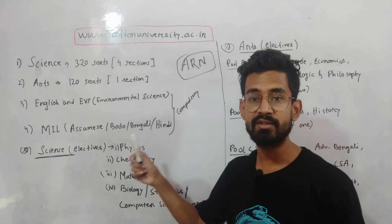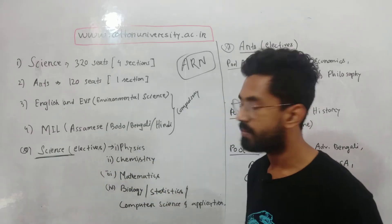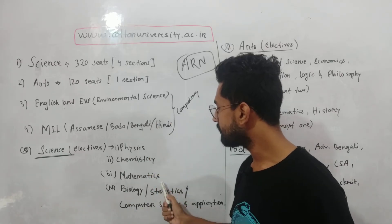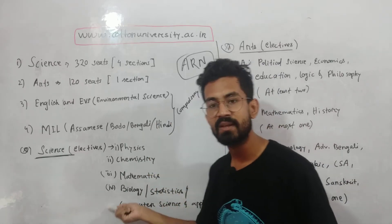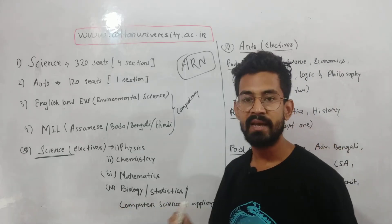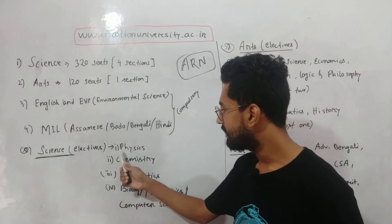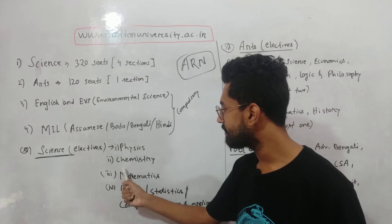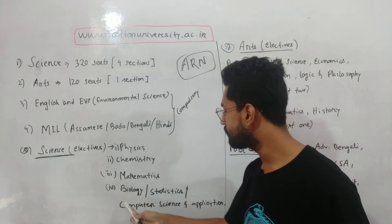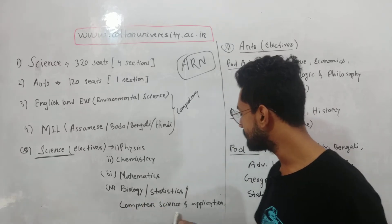The third category is science or elective subjects. Science or elective is the most important part. Physics is compulsory, chemistry is compulsory, and mathematics is compulsory. The optional subjects include biology, statistics, computer science and applications. The core science subjects are physics, chemistry, mathematics, and biology or science, with options of statistics, computer science and application.